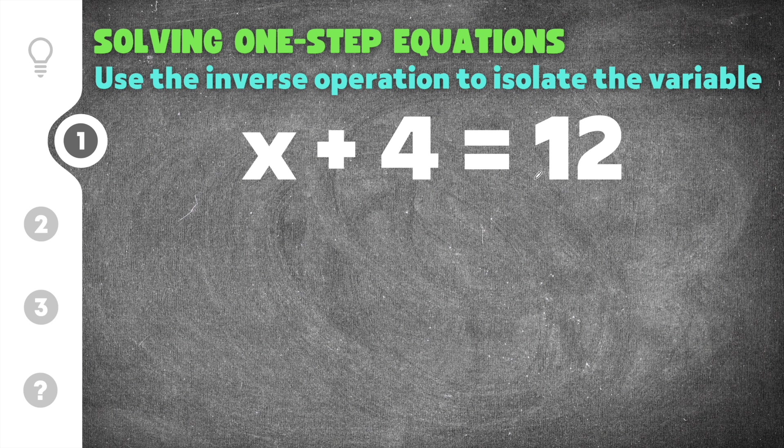This problem gives us x plus 4 equals 12. Now remember we're trying to isolate x, which means we're trying to get it by itself. In order to do this we have to undo the plus 4. The opposite of plus 4 is minus 4, so I'm going to go ahead and subtract 4 from both sides of the equation.